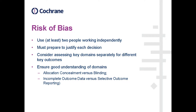The best way to do this is in the protocol — give as much detail as possible about each of the domains and describe what you will consider to be a high risk of allocation concealment and what you will consider to be low risk, giving a few examples of exactly how you're going to make each decision. The two most common errors we see in reviews are people who confuse allocation concealment for blinding, and people who confuse incomplete outcome data for selective outcome reporting.